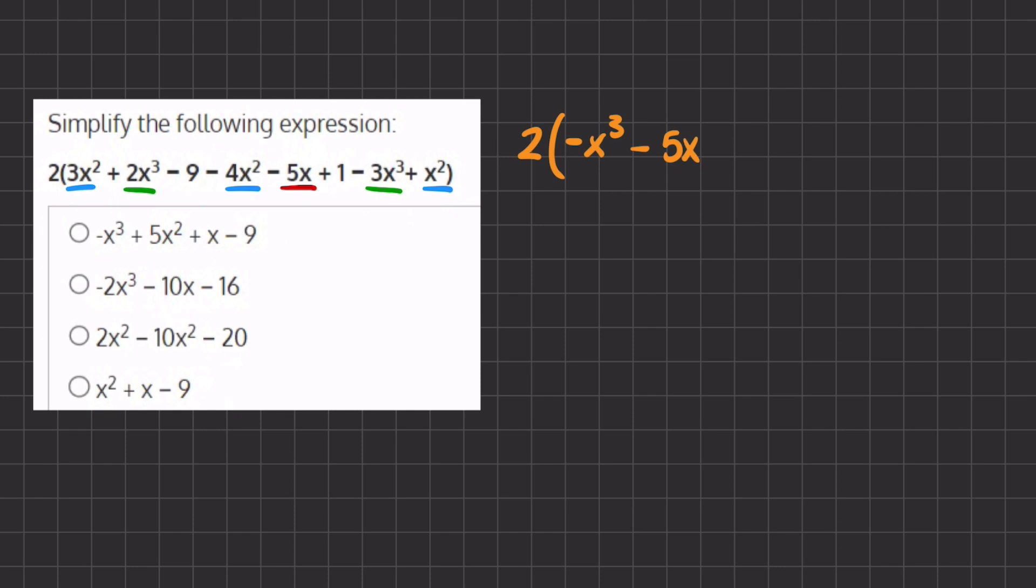And we'll find our next like term. So our next like term is going to be the numbers without any variables. So we have negative 9 plus 1, which will give us a negative 8.